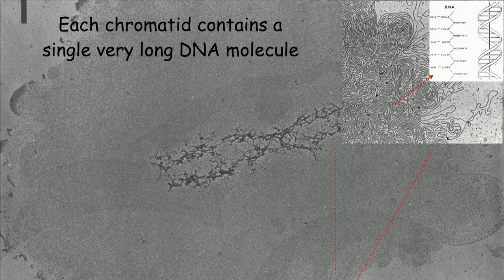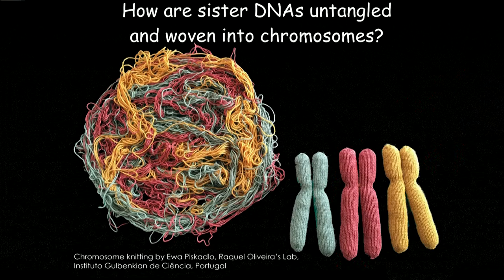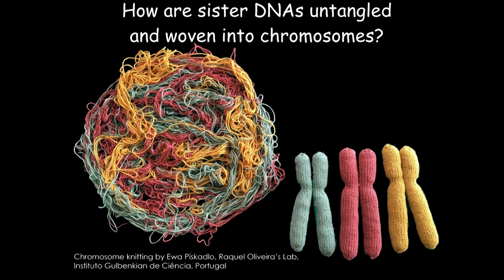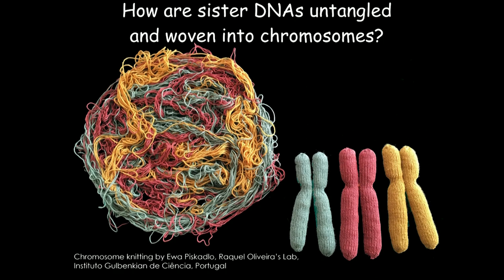How is that packaged into a cylindrical structure that can be segregated at cell division? This is the problem we face: after replication you've got those sister DNAs all tangled together, and they must be packaged into separate structures which are nevertheless held together by cohesin so they can be segregated to opposite poles of the cell. This is what we call the DNA weaving problem.